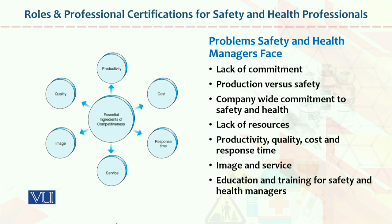Number two: production versus safety. Production — converting input to output — is important, but this process must always be carried out in alignment with safety. Production should be done following the designated SOPs. In good organizations, a pictorial representation of the production process is developed and shared with all employees so they know how the production process works. Production versus safety must always be kept in mind. Company-wide commitment to safety and health: Better organizations share and communicate decisions at a broad level, from top-level to all lower-level employees.